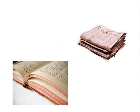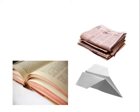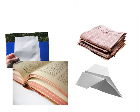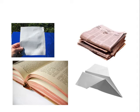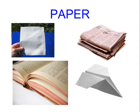Here we have the news. We have a book and pages in the book. Here we have an airplane. And we have tissue. What are all these made out of? Paper. That is correct.